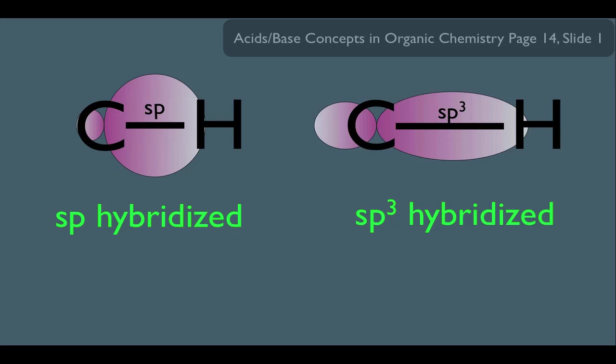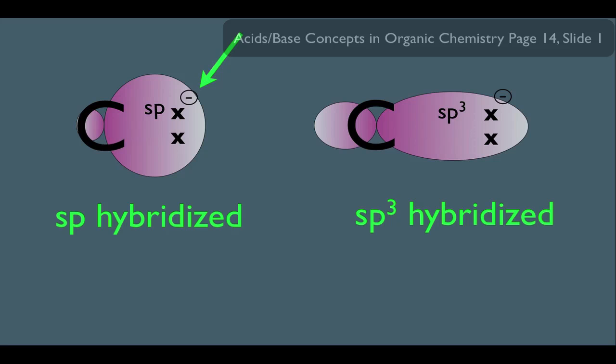Now let's have them act as acids, which means they're going to give up their H+, and this is what's going to be left behind, the conjugate base, or in other words, we're going to have a lone pair of electrons sitting on top of a carbon. Now notice the electrons right here. We can say they're more hugged up to the carbon, and these electrons would be further away from the carbon. This is simply due to the relative sizes of sp and sp3 hybridized orbitals.